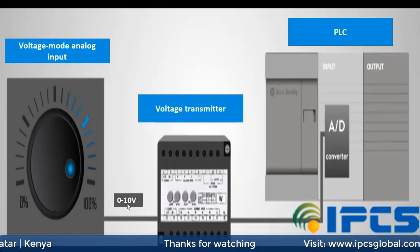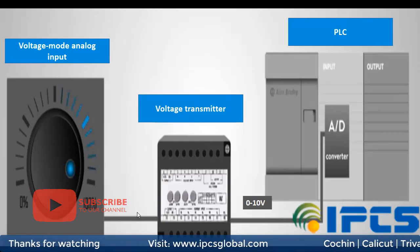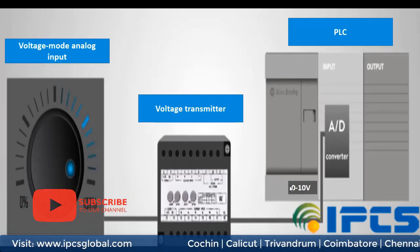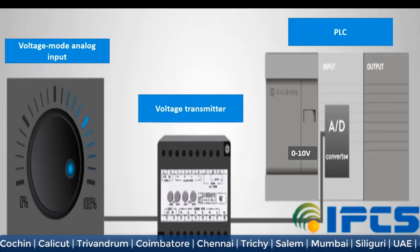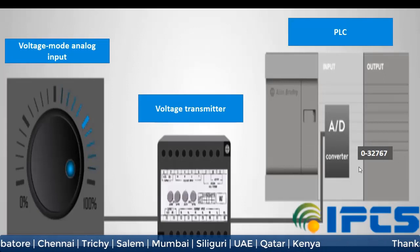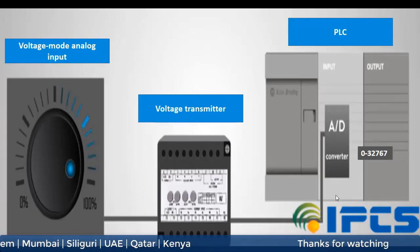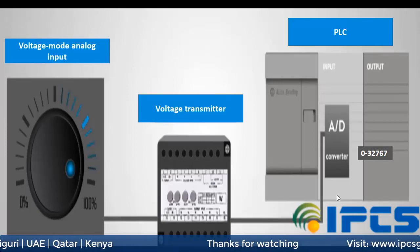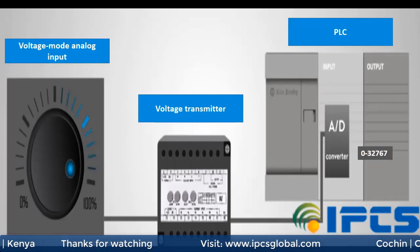Here our PLC input is 0 to 10V. When this analog input signal enters the analog PLC, it goes through an ADC and converts to a digital value. By using the SEL instruction, we can scale down the digital value to a range which will be meaningful to the operator and other users of the system.